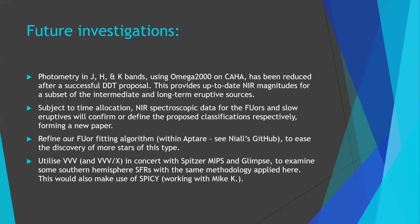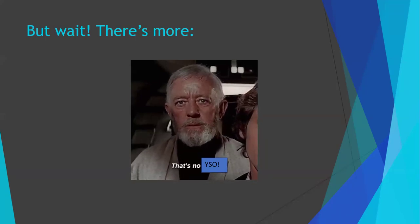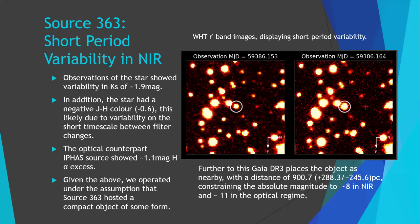Now we'll move on to some of the other random stuff I found in my thesis — that's no YSO. Source 363 — those of you who've been here a while will know what this is. We found a new infrared-bright cataclysmic variable hiding in YSO data, simply because its variability is fast enough that we can catch it on the filter wheel timescale changes on UKIRT.